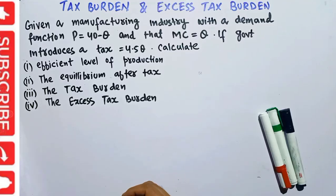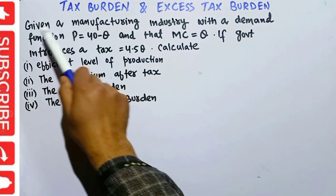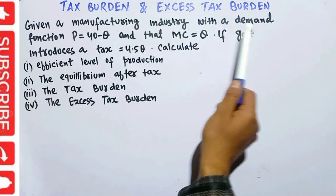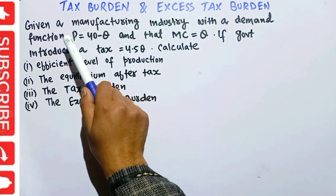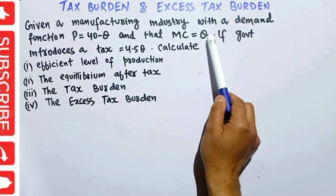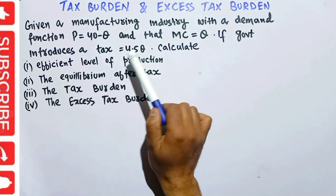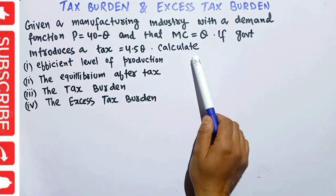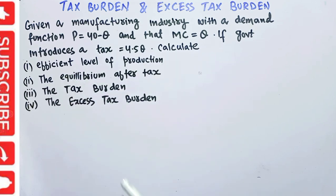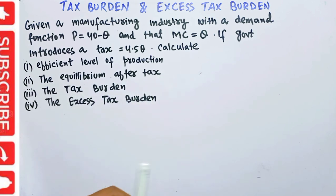In this video we will solve a numerical problem on how to calculate tax burden and excess tax burden. Given a manufacturing industry with the demand function P = 40 - Q, where P is the price and Q is the quantity, and marginal cost is equal to Q. If the government introduces a tax equal to 4.5, we have to calculate the efficient level of production, the equilibrium after tax, the tax burden, and the excess tax burden.